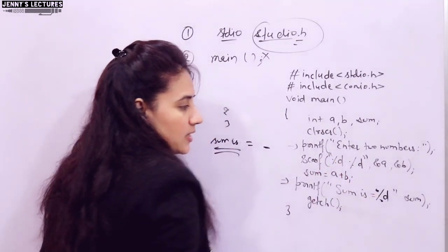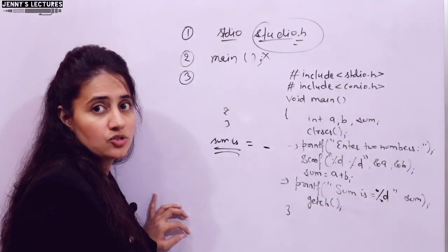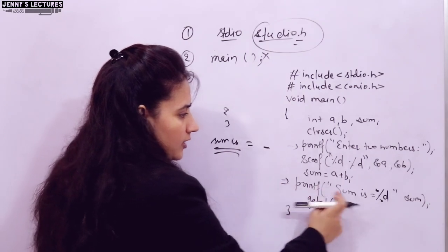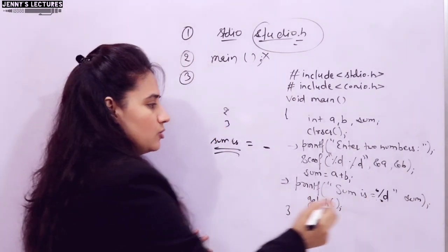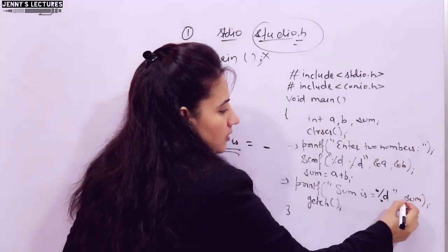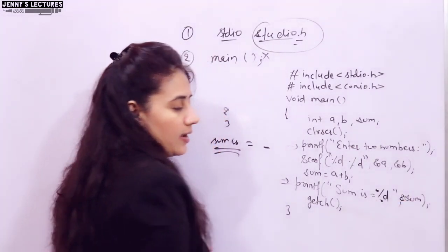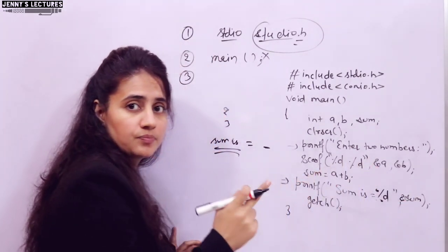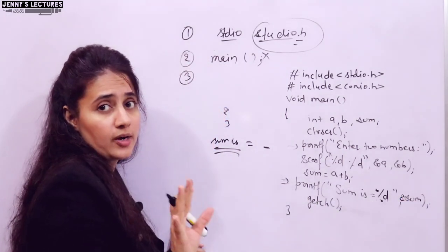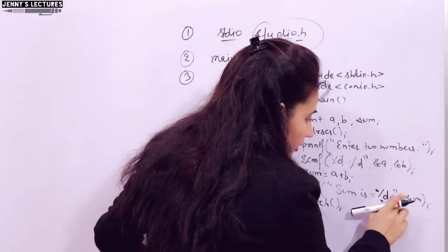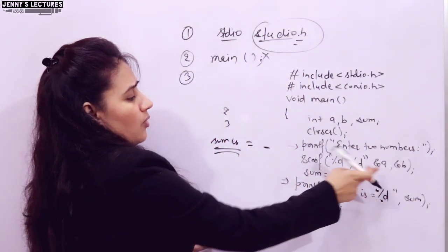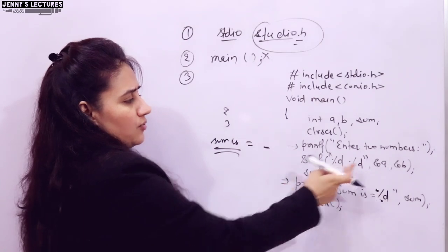If you forget the comma before the variable name in printf, you will get the error 'function call missing' with the cursor pointing to that line. Another mistake students make is writing the address-of operator '&' in printf — for example writing '&sum' — but you don't need the address-of operator in printf; that gives 'illegal use of pointer'.